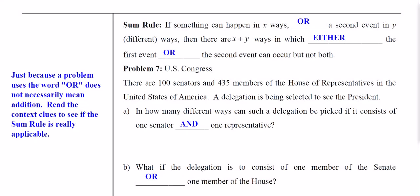In the last two videos we talked about the product rule — all we do is multiply options together. Now let's mix it up with the sum rule, which is addition. With the product rule there was an 'and' involved, but the sum rule is about 'or.' How many ways can I do this or do that? 'Or' means adding instead of multiplying. Usually we end up using a combination of both rules.